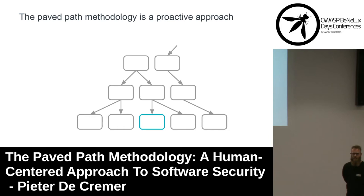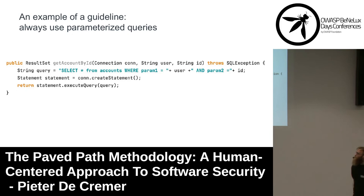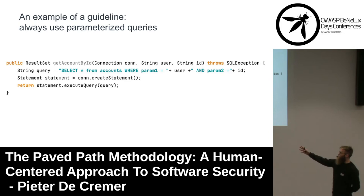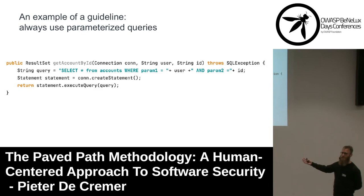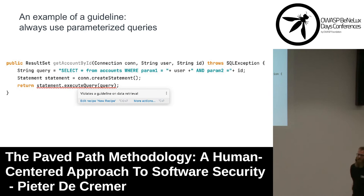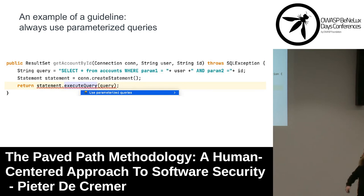An example is the use of parameterized queries. We have a routine called getAccountById that uses parameters from elsewhere in the code — a query is built using concatenation, and if the string parameters user and ID contain unsanitized user input, this might result in a SQL injection. With the paved path methodology, we simply say: always use parameterized queries. Whether or not getAccountById is already called somewhere, we call this a violation of the guideline, and the resolution is to use parameterized queries.